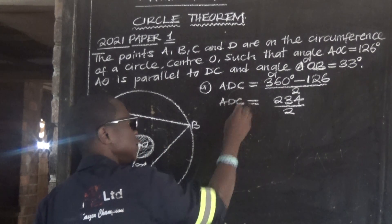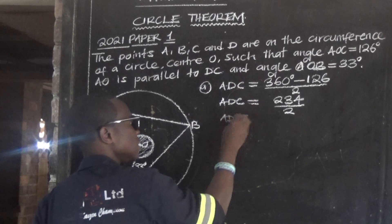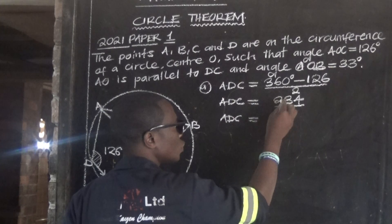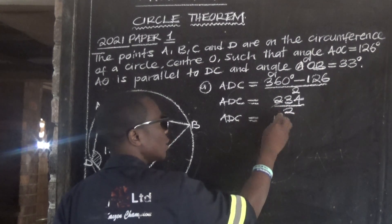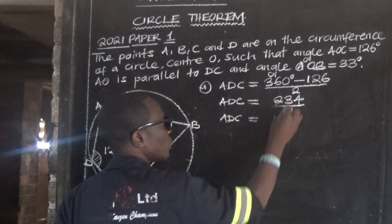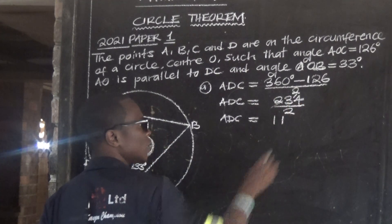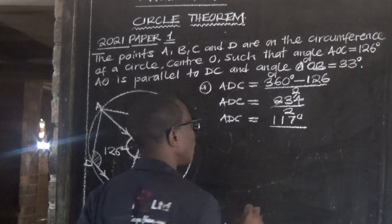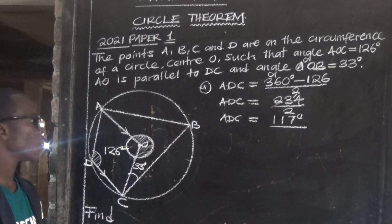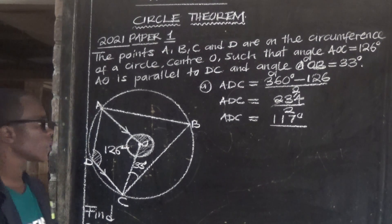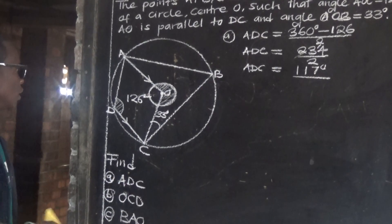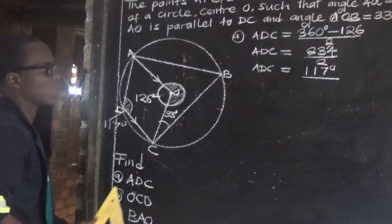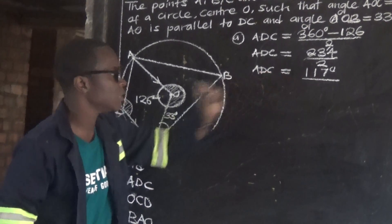So ADC is equal to 360 minus 126, which gives us 234, divided by 2. We divide: 2 into 234 gives us 117. So this angle ADC is 117 degrees.